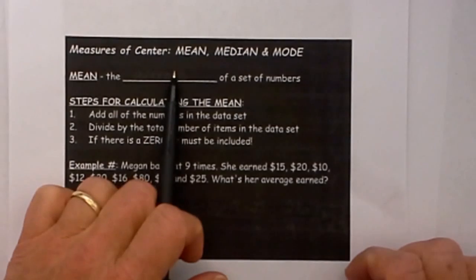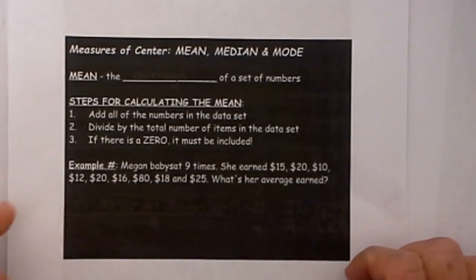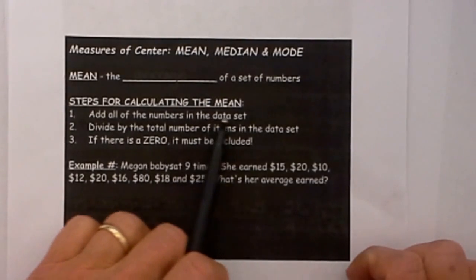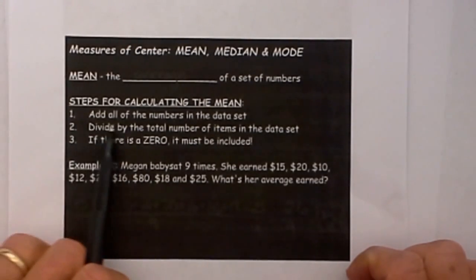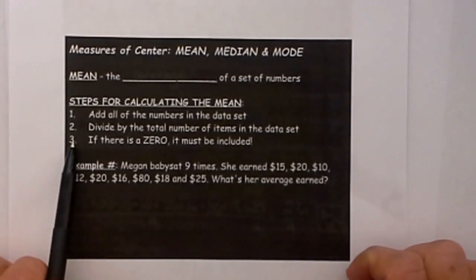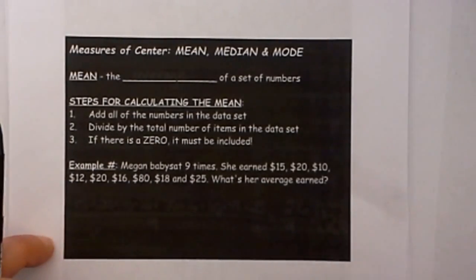The mean is the average of a set of numbers. Here are the steps for calculating the mean: Add all the numbers in the data set. Divide by the total number of items in the data set. If there is a zero, it must be included.